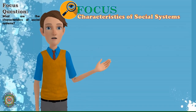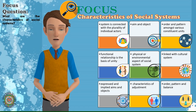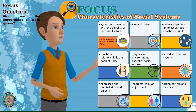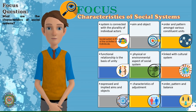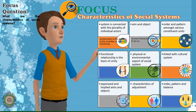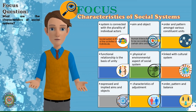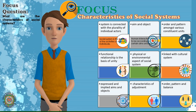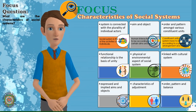Our next topic is all about the characteristics of social systems. 1. System is connected with the plurality of individual actors: A social system cannot be born as a result of the activity of one individual. It is the result of the activities of various individuals — interaction of several individuals has to be there. 2. Aim and object: Human interactions or activities of the individual actor should not be aimless or without object. These activities have to be according to certain aims and objects, as expressed through different social relations born as a result of human interaction. 3. Order and pattern amongst various constituent units: Mere coming together of various constituent units does not necessarily create a social system. It has to be according to a pattern, arrangement and order. The underlying unity amongst various constituent units brings about social system.